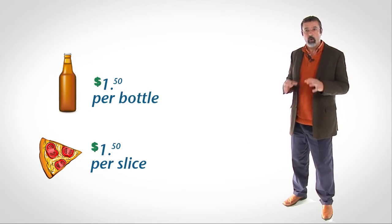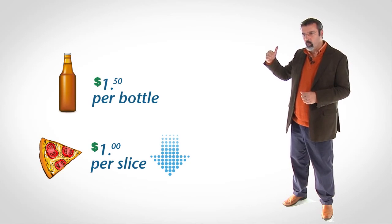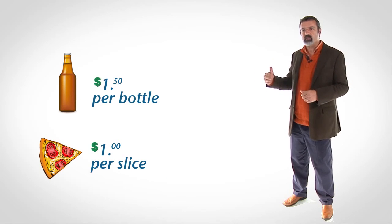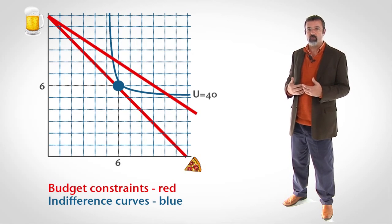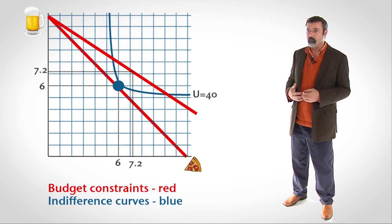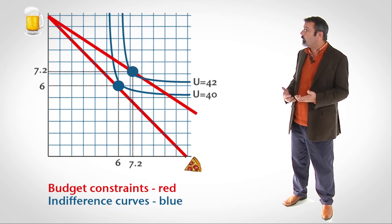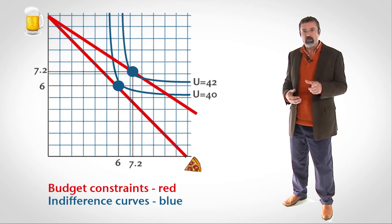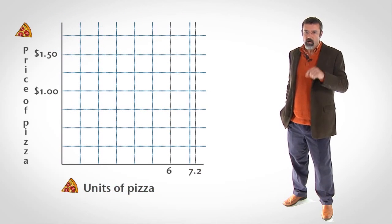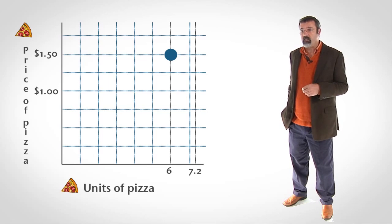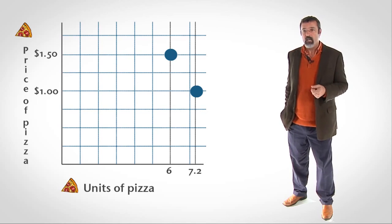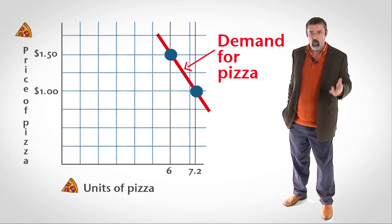Suppose the prices of beer and pizza are both $1.50 each, and the price of pizza falls from $1.50 to $1.00. The decrease in the price of pizza causes the budget constraint to rotate to the right. When the budget constraint rotates to the right, you can now attain a higher utility than before. You will choose the combination of beer and pizza on the highest attainable indifference curve — in this example, 7.2 beers and 7.2 slices of pizza. Notice that the decrease in the price of pizza caused you to consume more pizza. We now know two things: when the price of pizza is $1.50, you will want to buy six units of pizza; when the price of pizza is $1.00, you will want to buy 7.2 units of pizza. This relationship between the price of pizza and the number of units of pizza you want to buy is demand. Demand is what results when consumers attempt to maximize their utilities given their budget constraints.